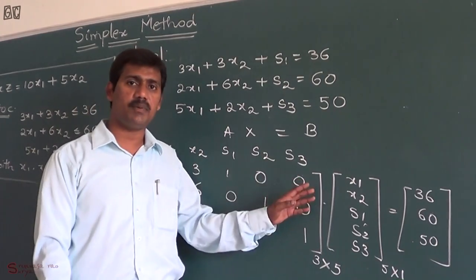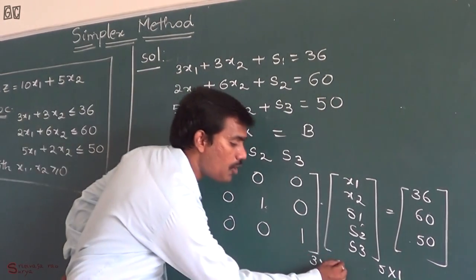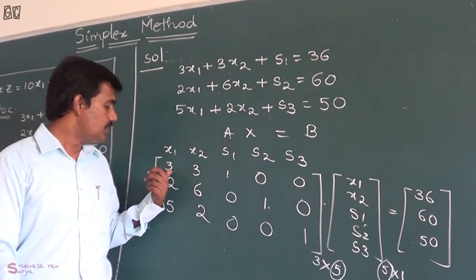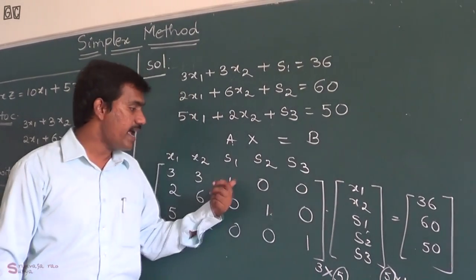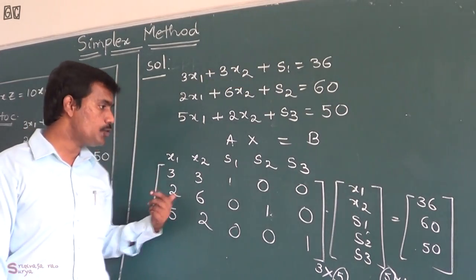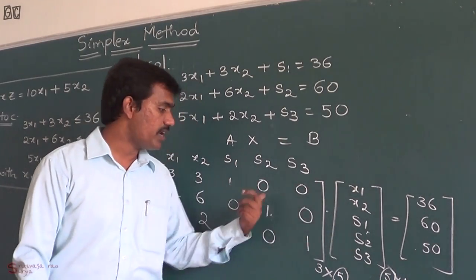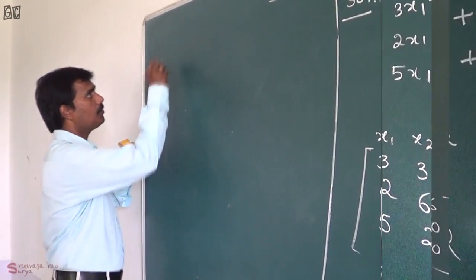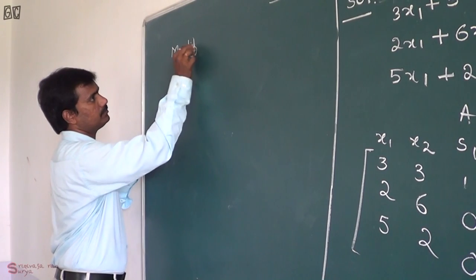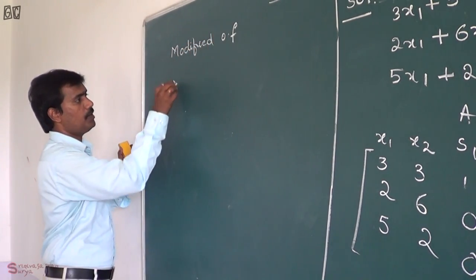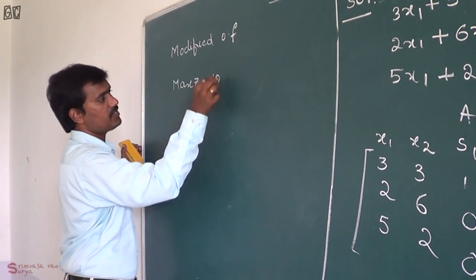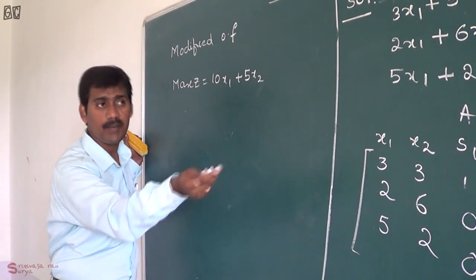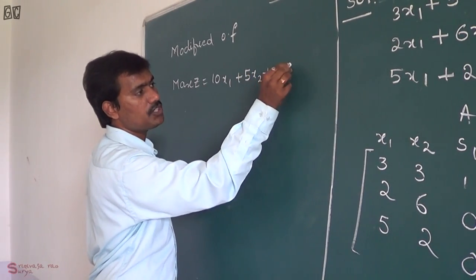Matrix multiplication is applicable when the number of columns in the first matrix equals the number of rows in the second matrix. For example, 3x1 plus 3x2 plus s1 equals 36, and 2x1 plus 6x2 plus 0·s1 plus 1·s2 plus 0·s3 equals 16. Now the modified objective function is: maximize z equal to 10x1 plus 5x2. We introduce slack variables, and their cost will be 0.